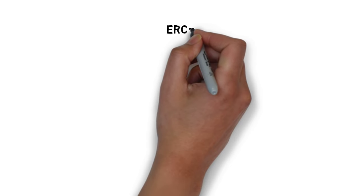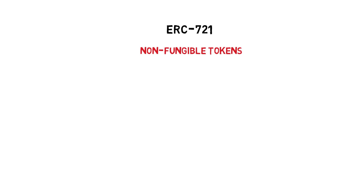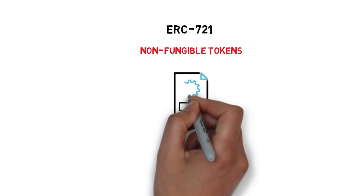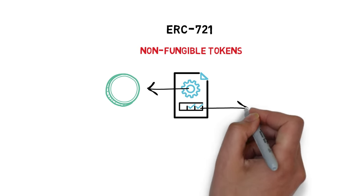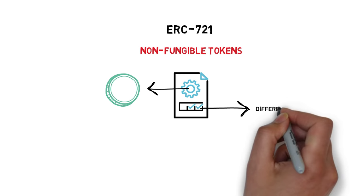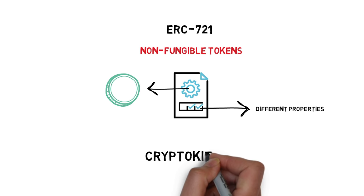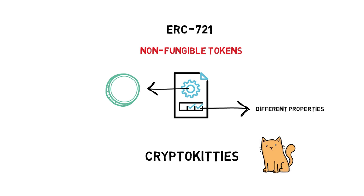ERC721 is a common standard for creating non-fungible tokens. It allows for creating contracts that can be used to create distinguishable tokens — tokens with different properties. A common example of this is the famous CryptoKitties, a game that allows for collecting and breeding virtual kittens.